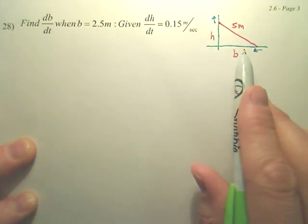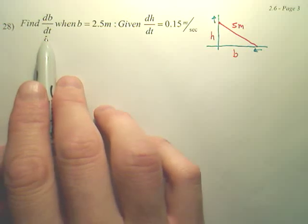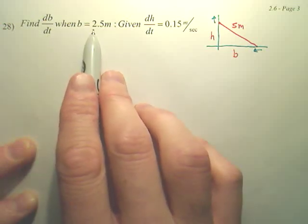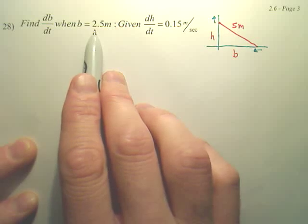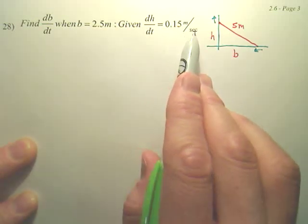These are both at different rates at which they move. We want to find the rate at which you're moving the base of the ladder when the base is 2.5 meters away from the wall, given that the height is changing at 0.15 meters per second.